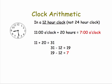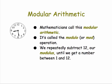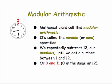Clock arithmetic is also known to mathematicians as modular arithmetic, and we are performing a modulo operation, or a mod operation. We can do this by repeatedly subtracting 12 — which is our modulus in this case — until we get a number between 0 and 11. A common way of doing modular arithmetic is to start counting at 0 and go up to 1 minus the modulus.